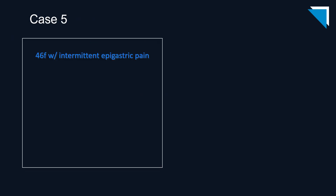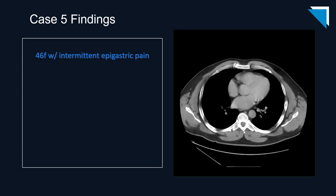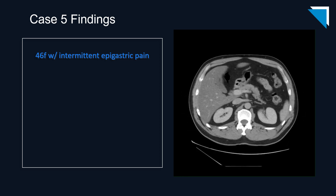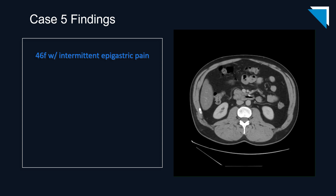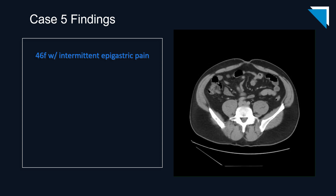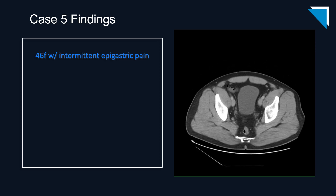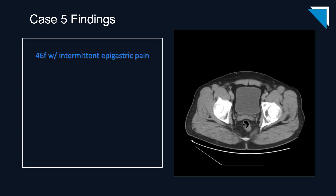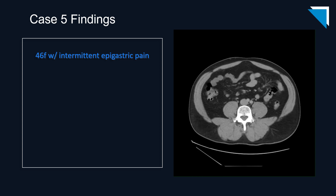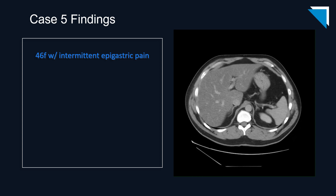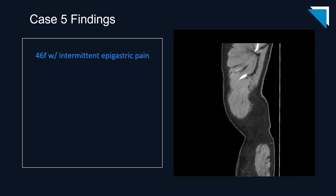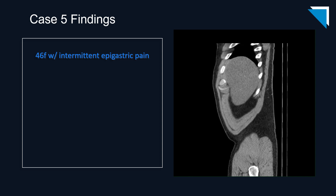Our last patient for this session is a 46-year-old woman with intermittent epigastric pain. These are axial images from a contrast-enhanced CT scan of the abdomen and pelvis, as well as the sagittal images from the same patient.